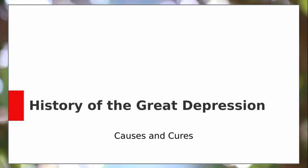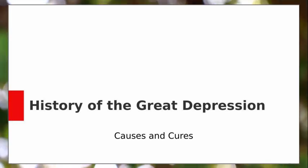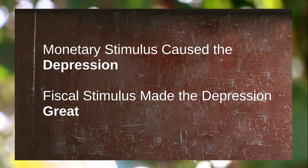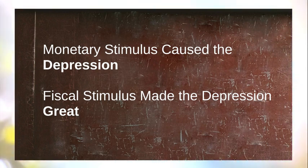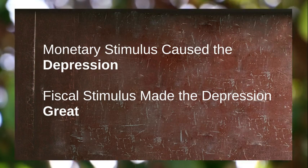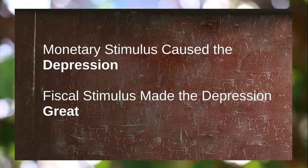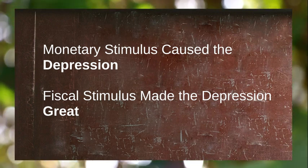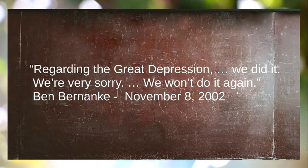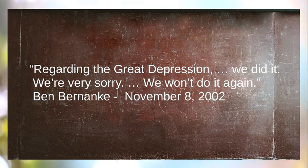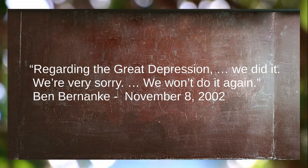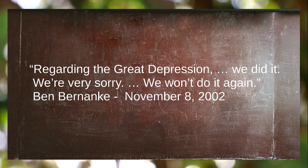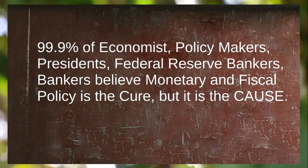The causes and cures of the Great Depression. My claim is the Great Depression was caused by Federal Reserve action in the 1920s, and this created a great disequilibrium in the 1930s. My second claim is FDR's fiscal policy exacerbated and extended the Great Depression. Monetary and fiscal policy caused and extended the Great Depression, and this is contrary to modern economic theory and policy today.